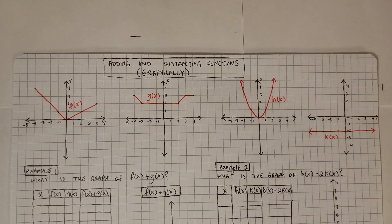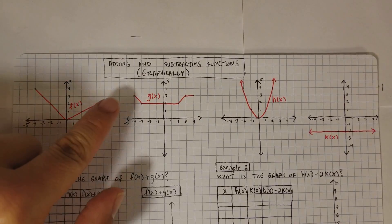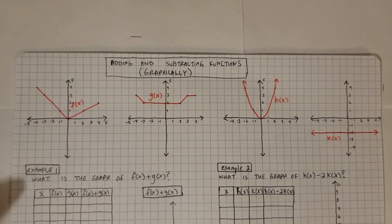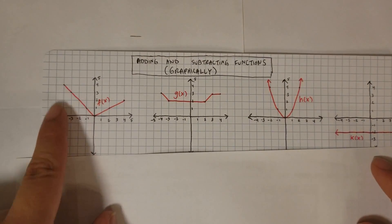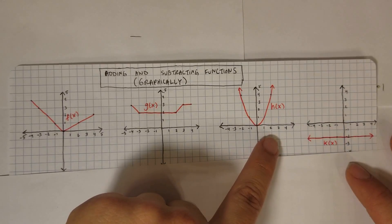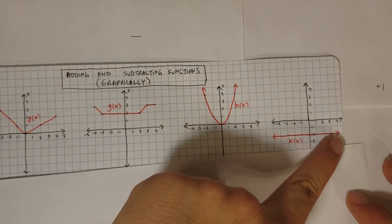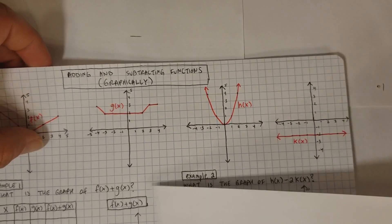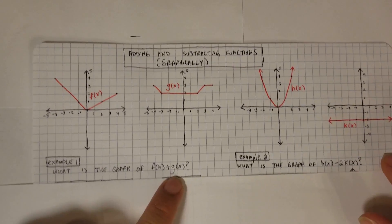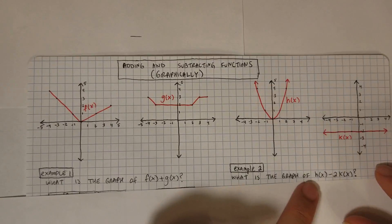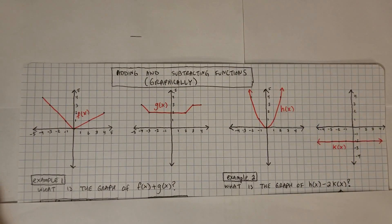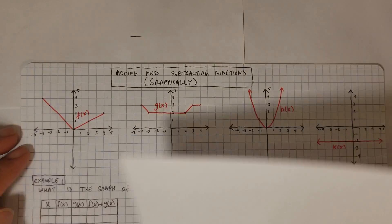If you look at the graph, it will either be decreasing, increasing, constant, or whatever the graph may be. For the domain where the graph exists — so basically this graph exists from negative 4 to positive 4, this one from negative 4 to positive 4, this one from about negative 2 to 2, and this one negative 4 to 4 — you need to make a table. We have two examples: Example 1 is the graph of f(x) plus g(x), and Example 2 is the graph of h(x) minus 2 times k(x).